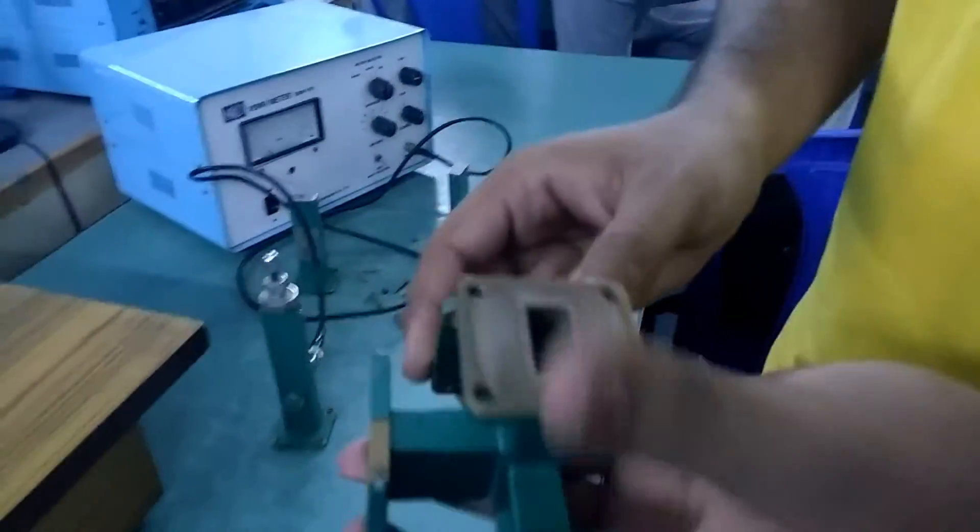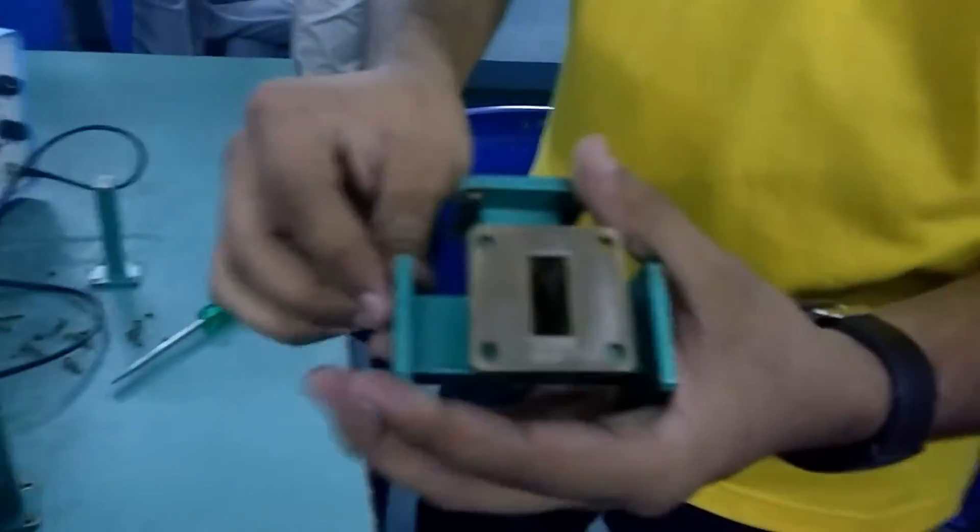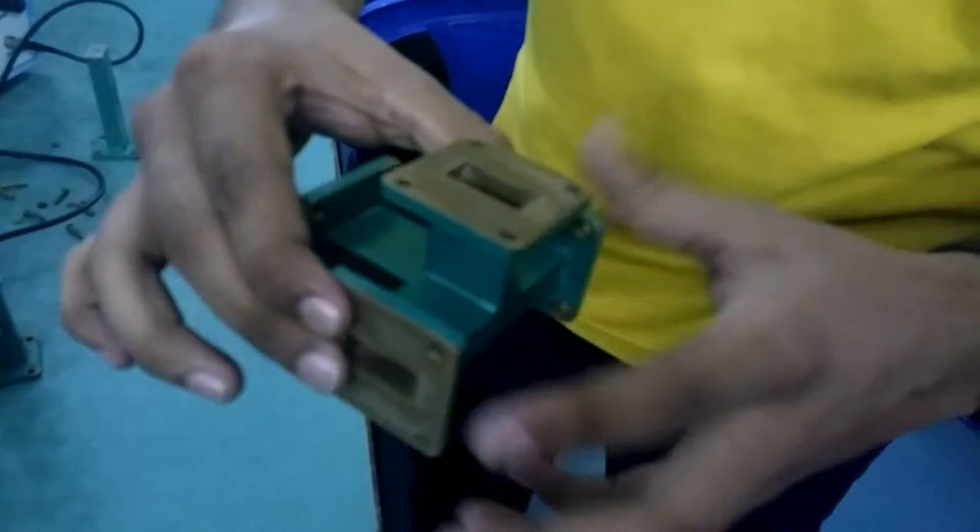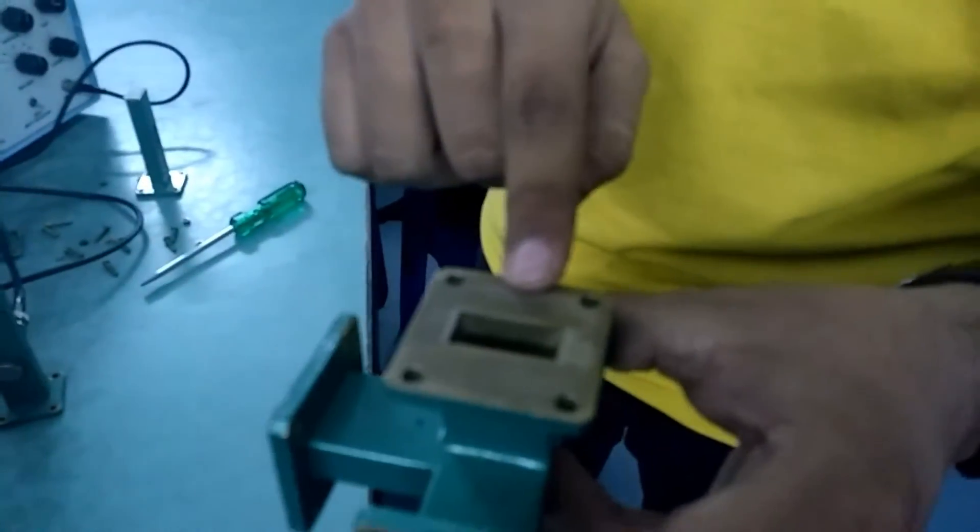This is the magic T. As we can see, in this plane there are three ports. There are two opposite ports, and this is called the H arm and this is the E arm.